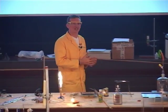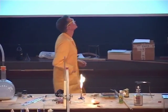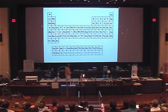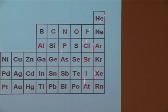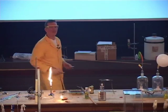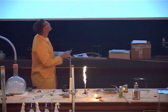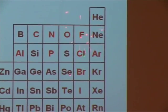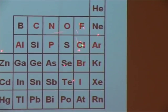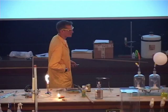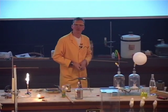You may have heard of halogen lamps — can you point to the halogens on the periodic table? Yes, very good. It's a whole family of elements. The halogens are fluorine, chlorine, bromine, and iodine.